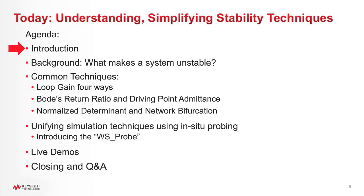Before we get started, we have a poll question. The question is: why might K-factor sometimes prove inaccurate? Is it that it doesn't consider the network determinant? Is it that it's based on the assumption that the unloaded network is stable? Is it that simulations don't always have enough sweep points to determine if it goes below one? Does it only apply to one-stage amplifiers? Or all of the above?